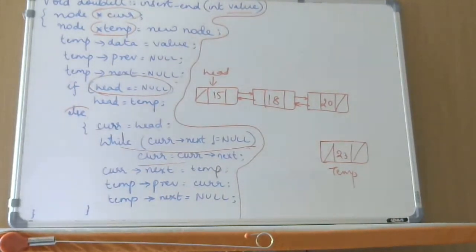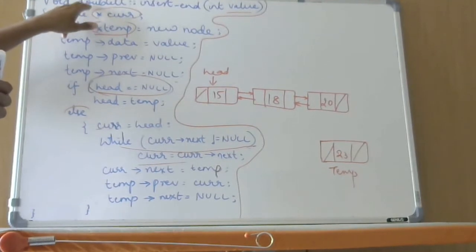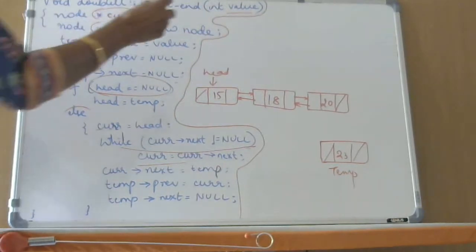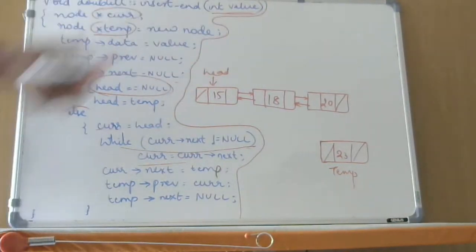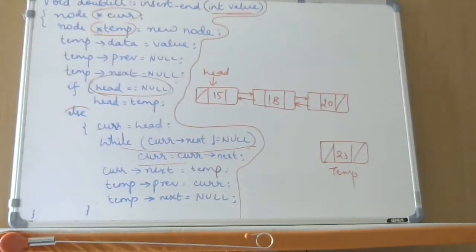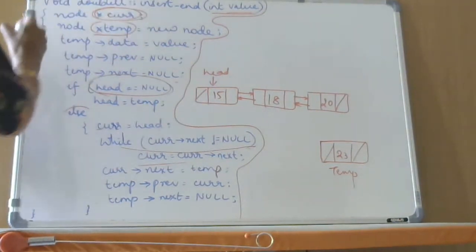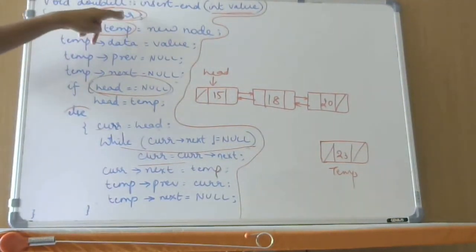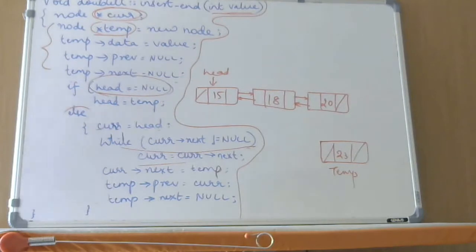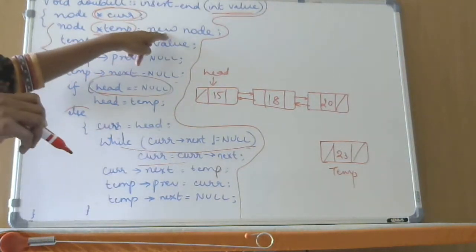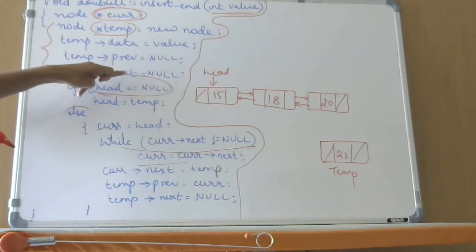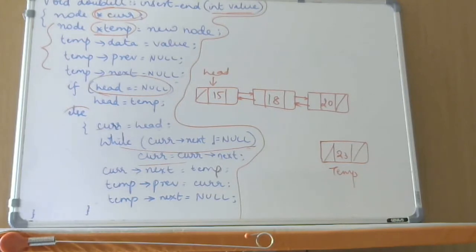This was a class that I had declared — double LN with the scope resolution operator, insert at int value. Value is something that you are going to accept from the user as to what you want to insert, and you are going to call this function from the main function by passing this as the parameter. Here we have taken a pointer called current. As we saw in the last video session, we are creating a new node called temp. I am going to allocate memory by using the new keyword. Temp of data is value, temp of previous is null, temp of next is null. So I am going to keep my node ready.